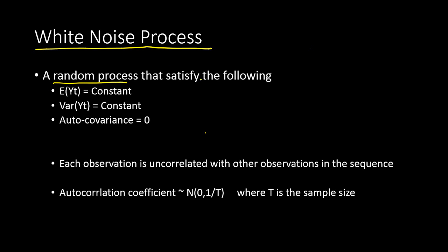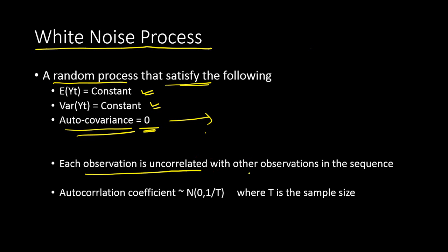A random process which satisfies the following criteria is called white noise. The first criterion is that the expectation of the time series should be constant. The second is that the variance should be constant. The third is that the auto-covariance is zero. The first two criteria are also part of a stationary process, but not the last one. The third criterion means there is no correlation between observations.